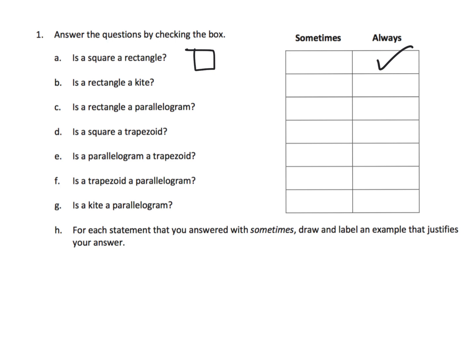Is a rectangle a kite? Hmm. So what is a kite? Well, a kite, you'll remember, consecutive sides have to be equal. Now, can a rectangle have consecutive sides that are equal? And the answer is yes. In fact, it would look like a square. So, is a rectangle a kite? And the answer is sometimes, when that rectangle is a square, then sometimes it is also a kite.